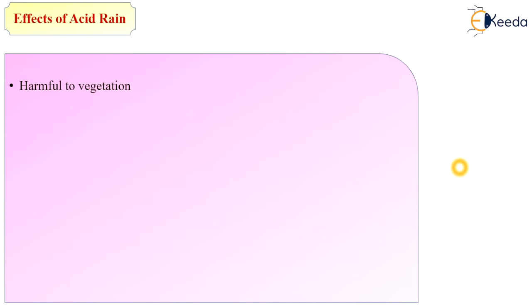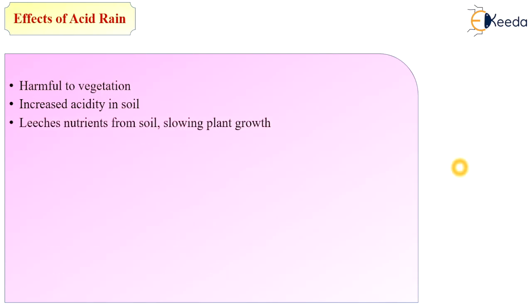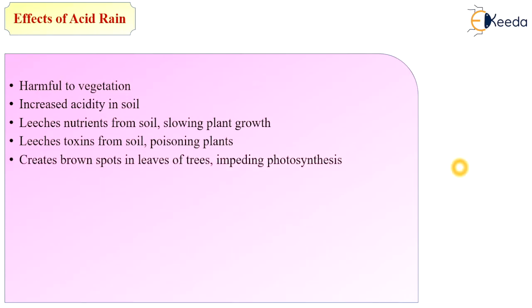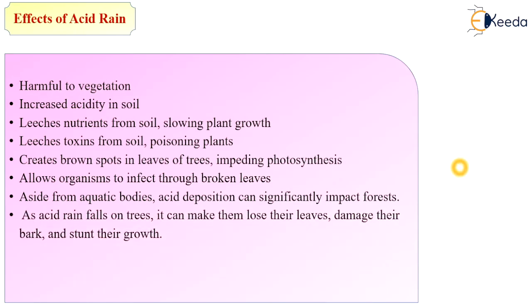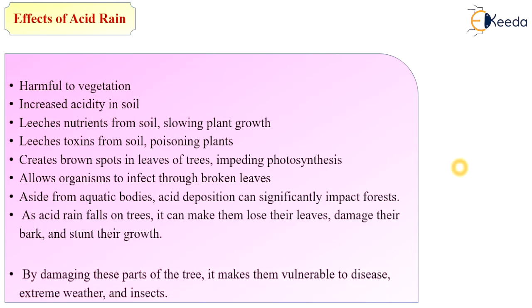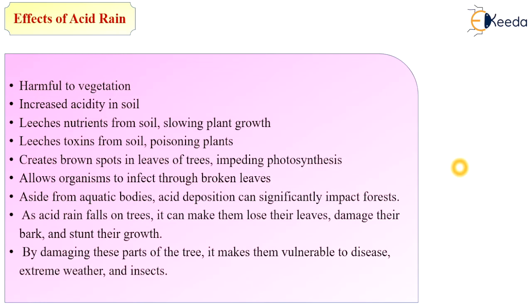The next effect is on vegetation. Acid rain increases acidity in soil, leaches nutrients from soil slowing plant growth, leaches toxins from soil poisoning plants, and creates brown spots on leaves impairing photosynthesis. It also allows organisms to infect plants through broken leaves. Acid deposition significantly impacts forests — as acid rain falls on trees, it can cause them to lose their leaves, damage their bark, stunt their growth, and make them vulnerable to disease, extreme weather, and insects.